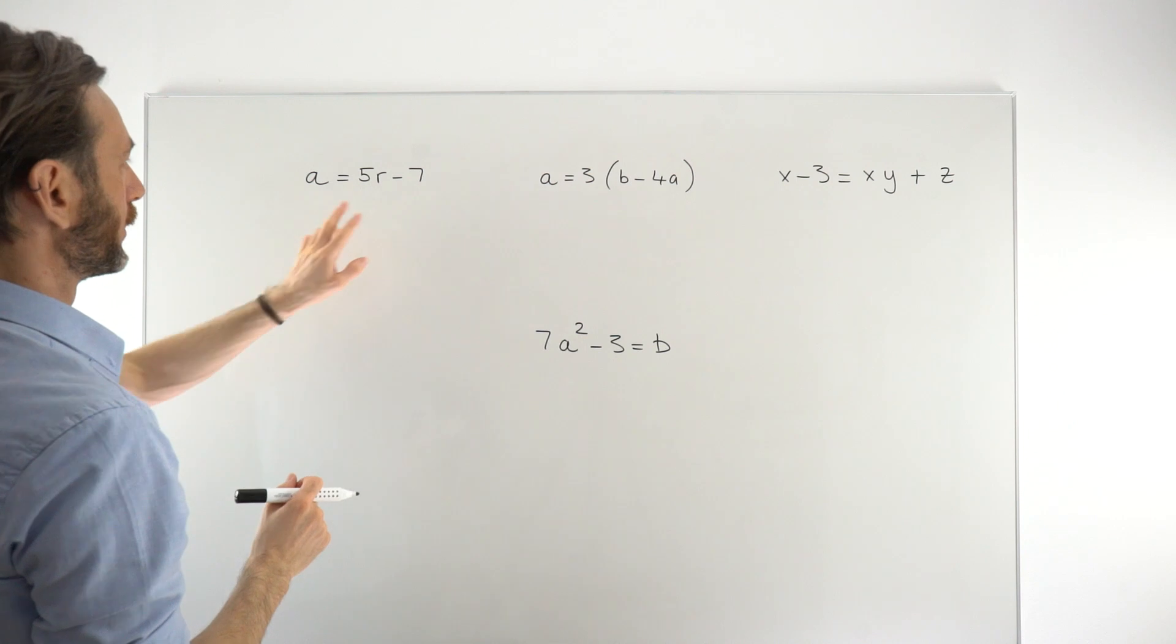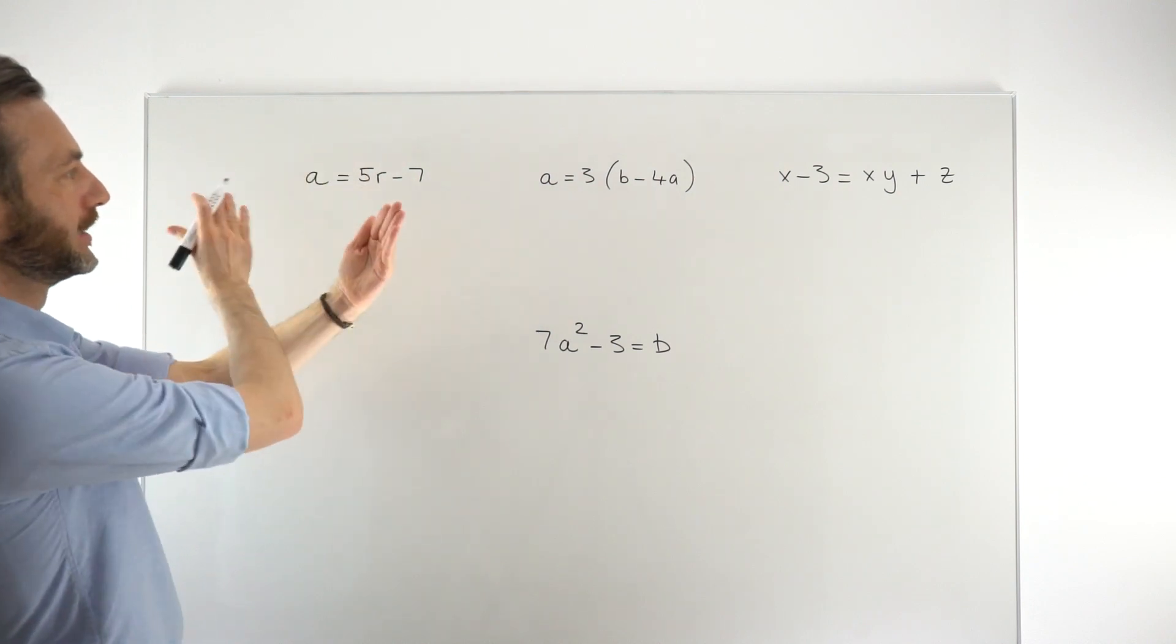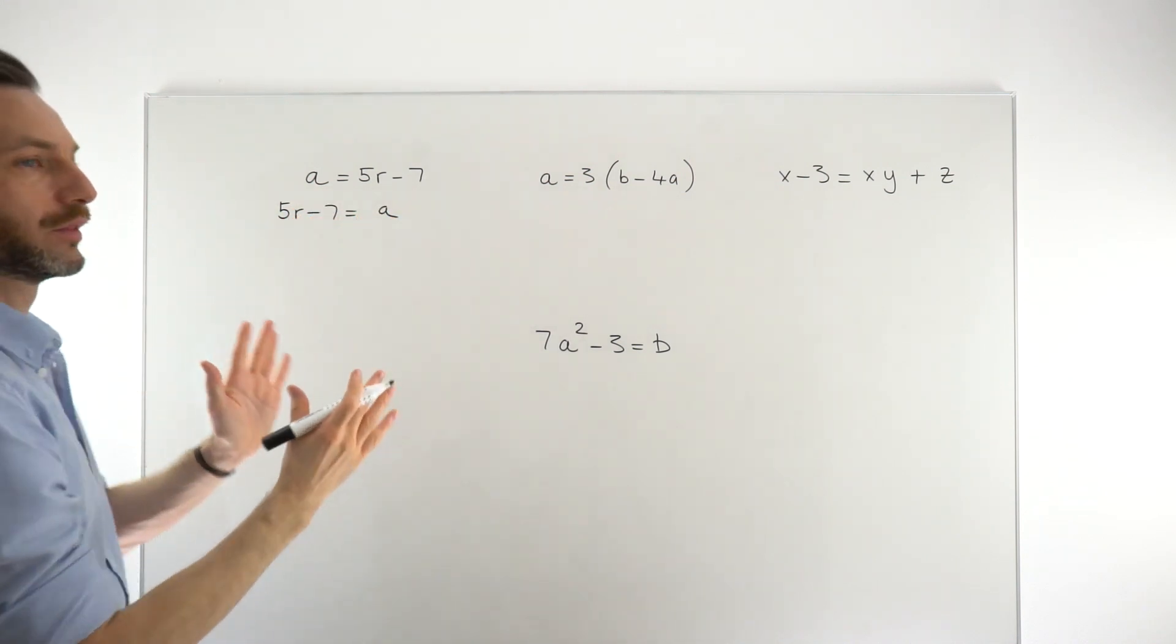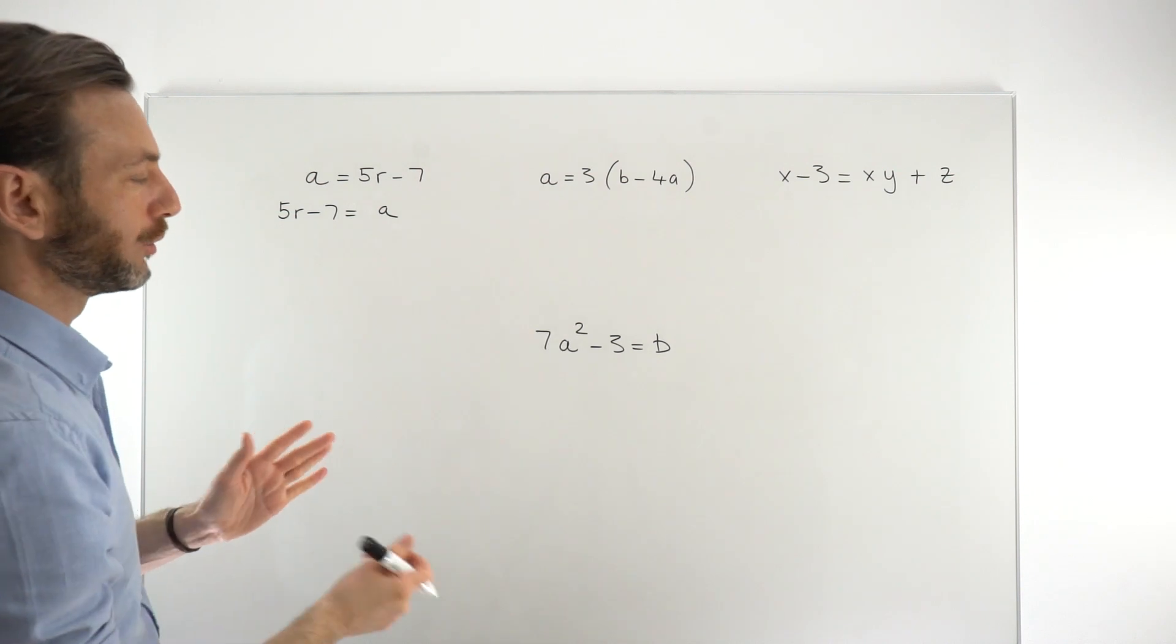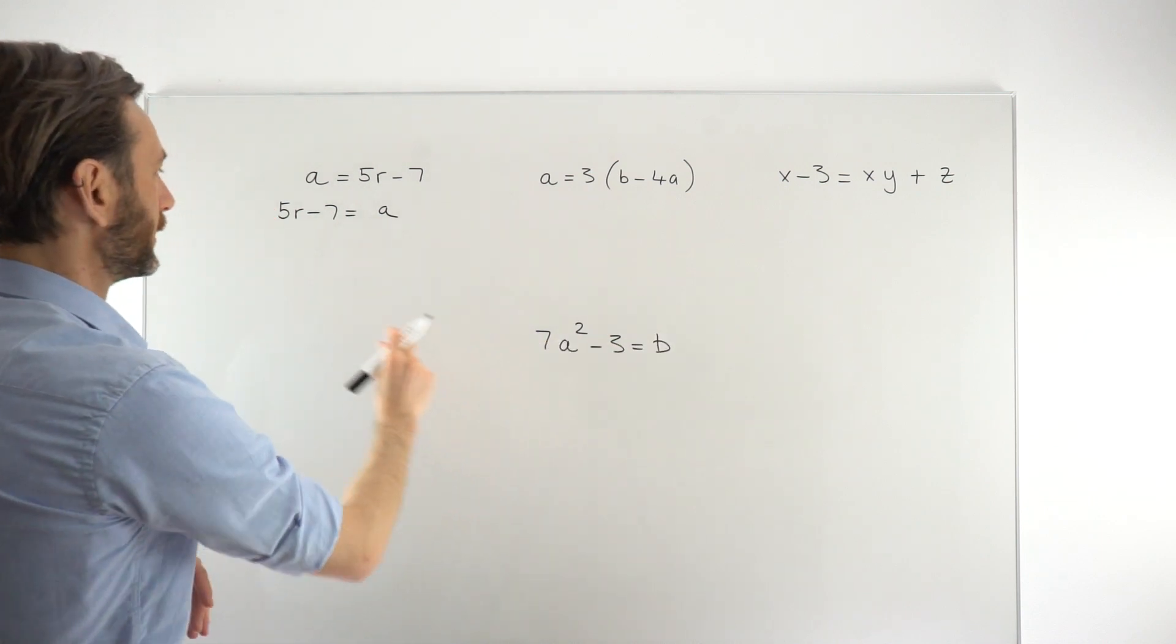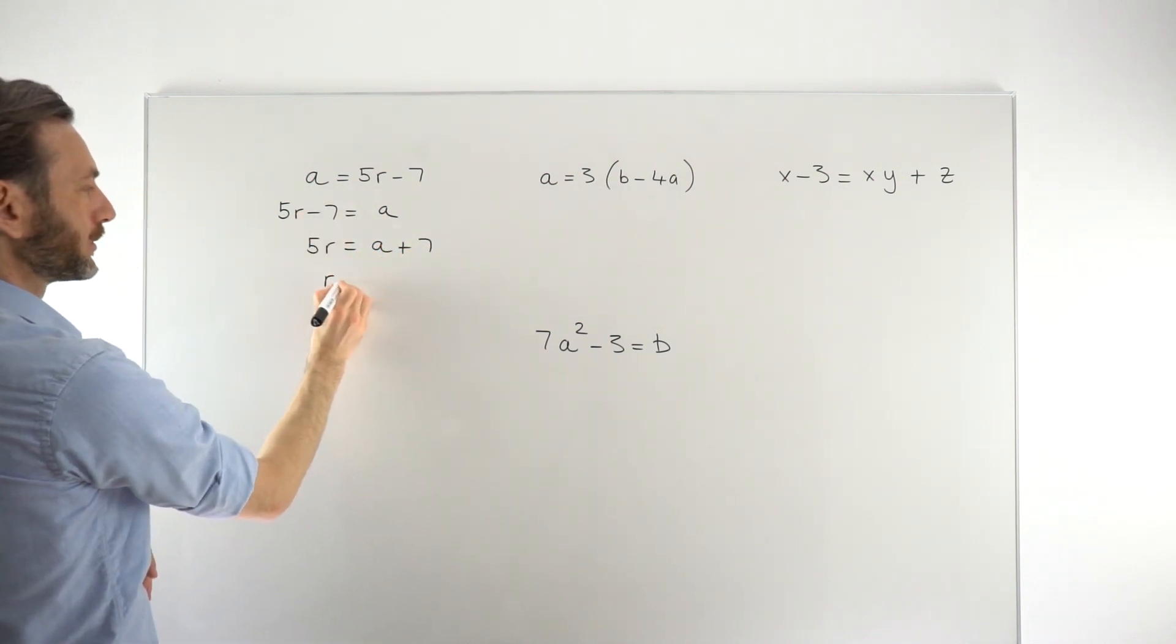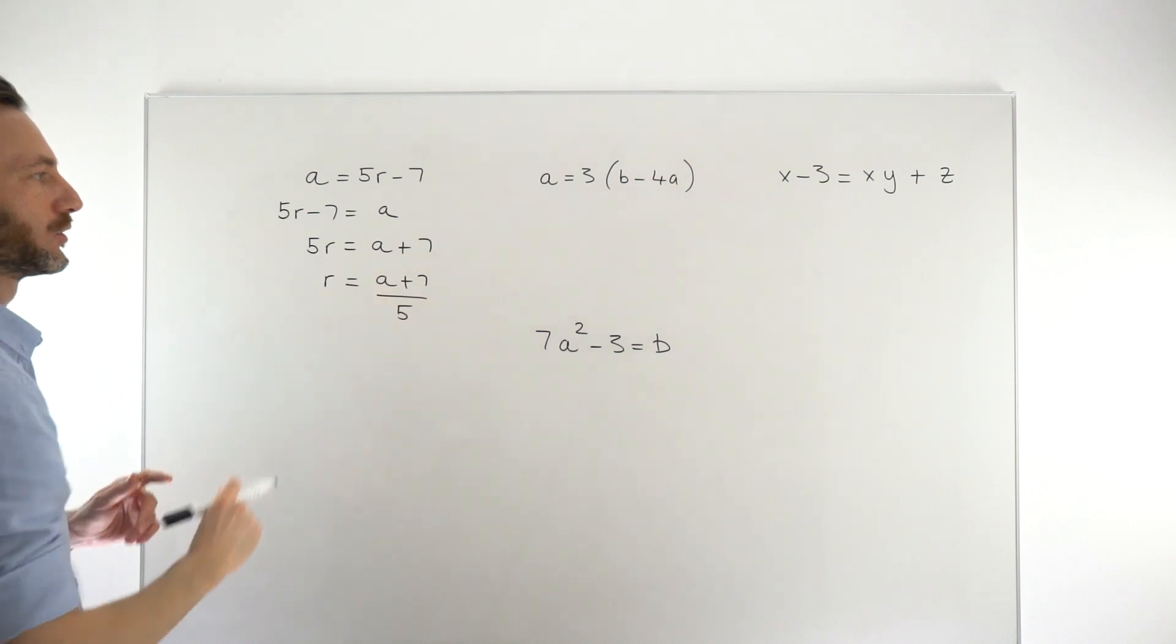But one little trick you can do with these—if your variable that you're interested in is on the wrong side of the equation, just start by spinning the equation around. So equations don't care if you write them left to right or right to left. That there is still the same equation, but the benefit of doing that, now we've got the R term on the left where we kind of want it. Because generally we want our subject letter to be on the left rather than on the right. So now we can just say, okay, we'll move the 7—minus 7 to the other side to get A plus 7, dividing both sides by 5 and we get A plus 7 over 5. And that is our rearranged formula.